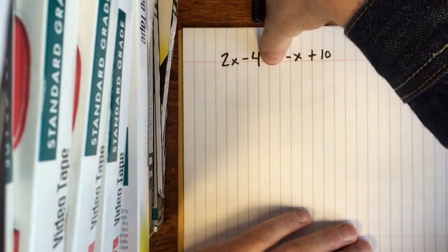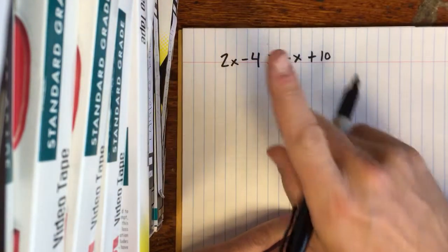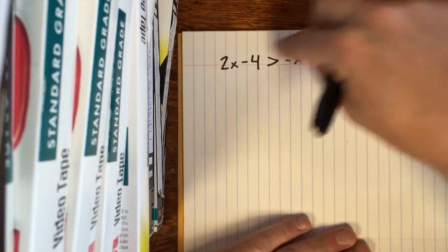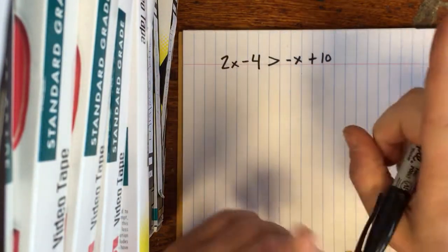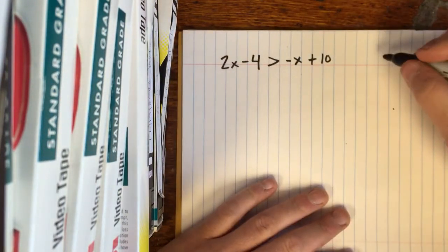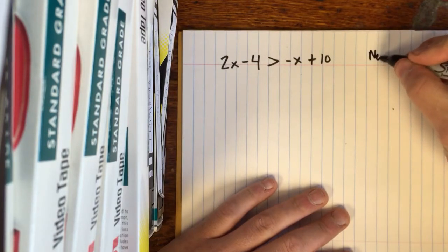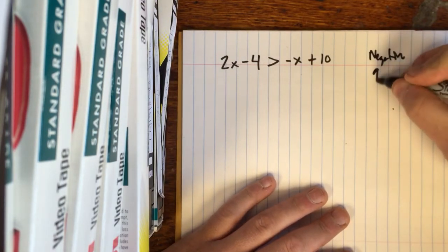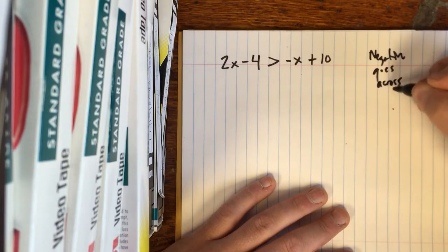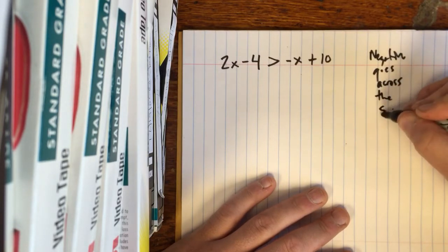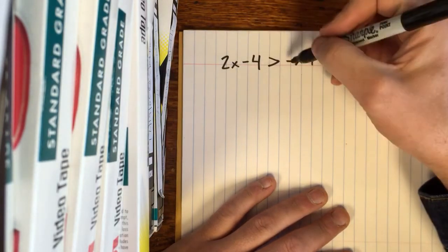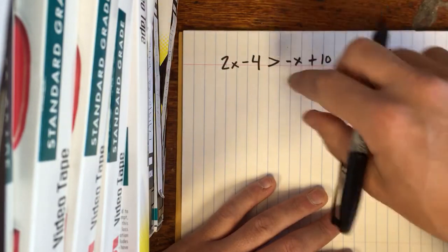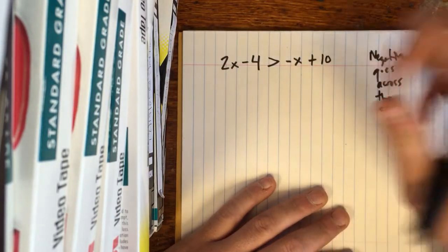What we want to do is solve this just like it's an equal sign there, except for one exception. You would solve it and try to get X by itself, but the only thing to keep in mind is if a negative goes across the sign. If I try to multiply or divide a negative across this sign, that's when something different's gonna happen.